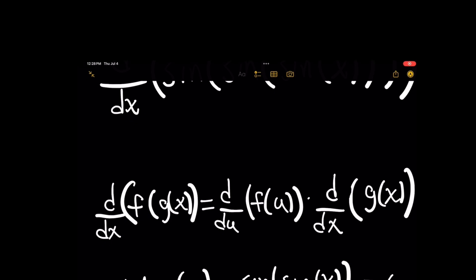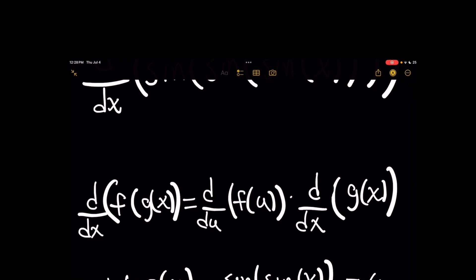And if you don't remember it, that's all right. I've got another video you can watch, but essentially you start by taking the derivative of the outer function and what it takes on the inside. You call it something simpler like u, and then you multiply that result by the derivative of that inside function in terms of x originally.